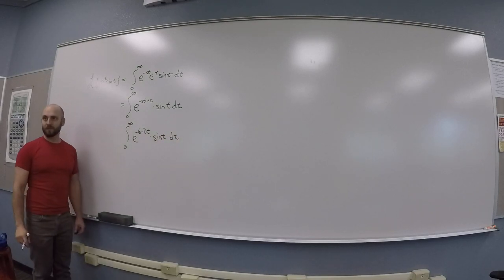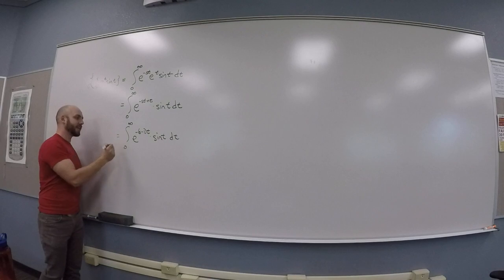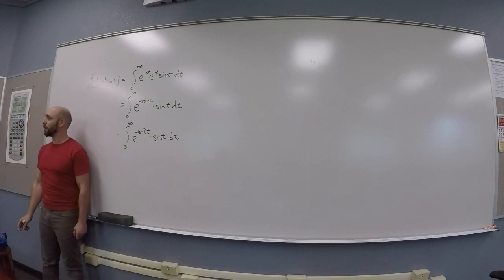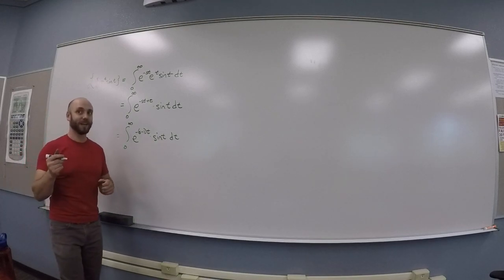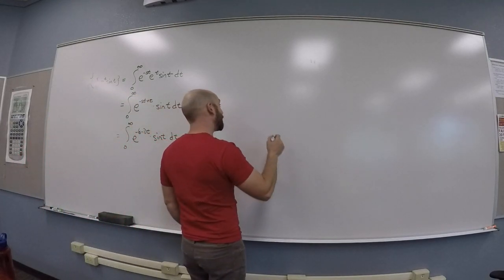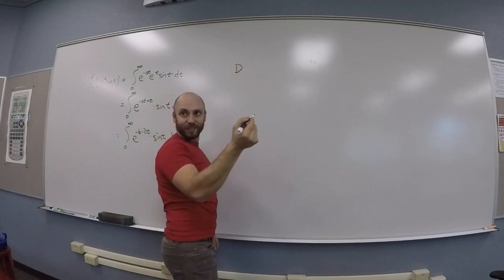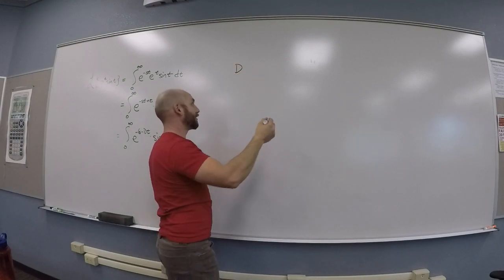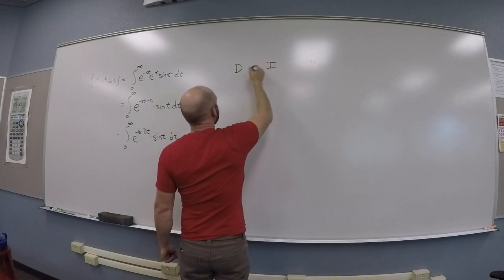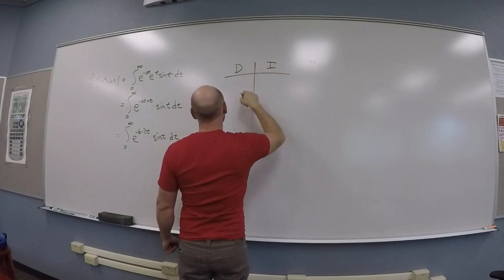Yeah, and then the kick of this is that you need to do by parts twice. And I just learned a fun trick, so I'm going to show you the trick and the around the corner thing. So, what do you call this thing? Tabular integration by parts? Or the DI method. Yeah, so, differentiate, integrate.